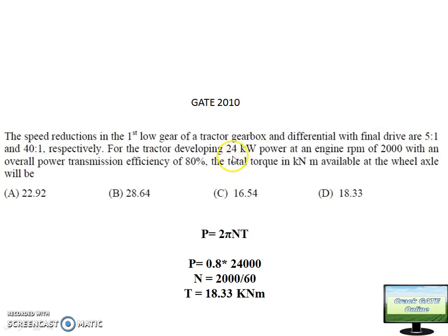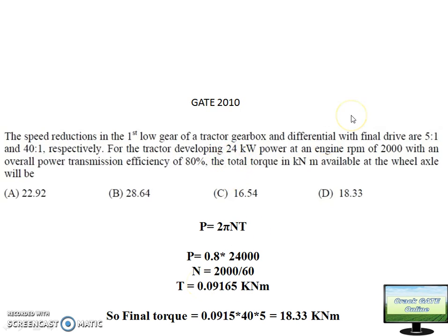We are having value of P and N so we are very familiar with this formula now: P equals 2πNT. N value is given, N is in rpm. P is 24 kilowatt given. 24 kilowatt of power is being produced by engine but here transmission efficiency is 80%, so not 100% of power has been transferred from engine to final drive. Effective power generated will be 0.8 into 24 kilowatt.